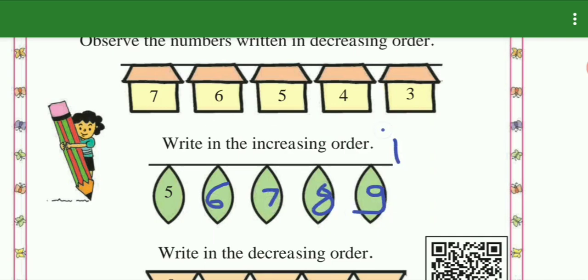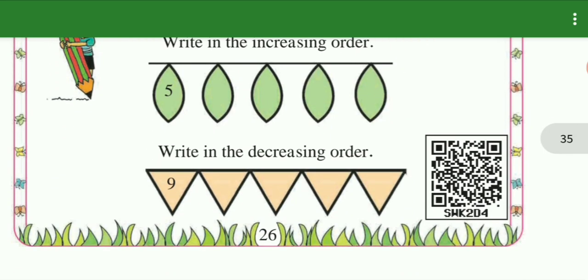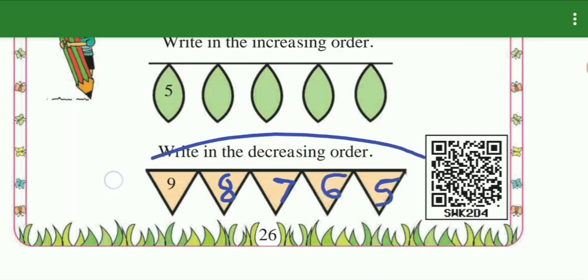What is the increasing order? Next, we will write in the decreasing order. What is the decreasing order? First the larger number, then smaller numbers. This is the decreasing order: 9, 7, 6, and 5. This is the decreasing order.